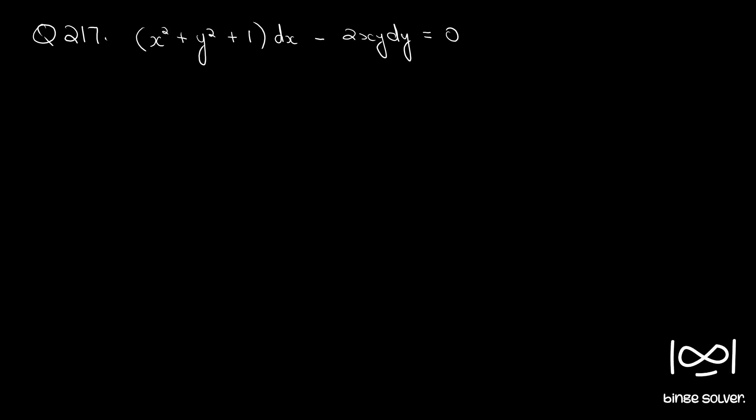Question 217. The differential equation is: (x² + y² + 1) dx minus 2xy dy equals 0.